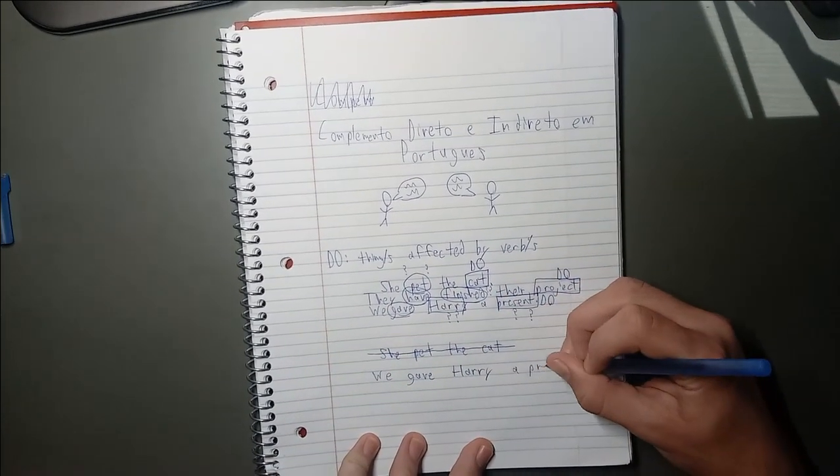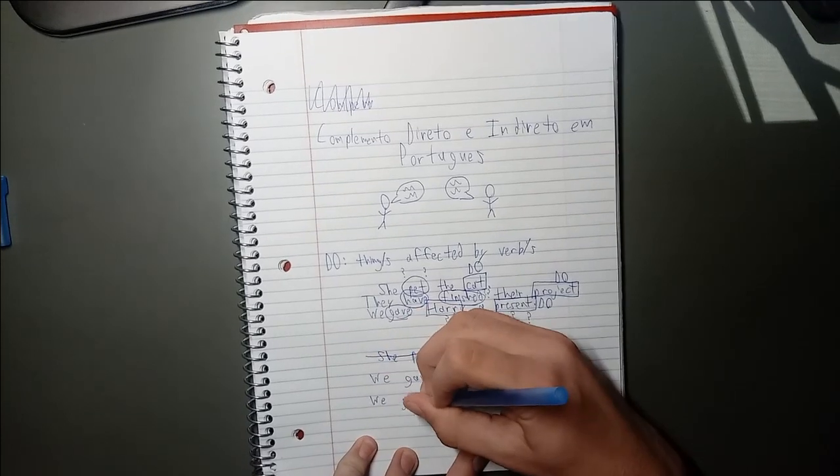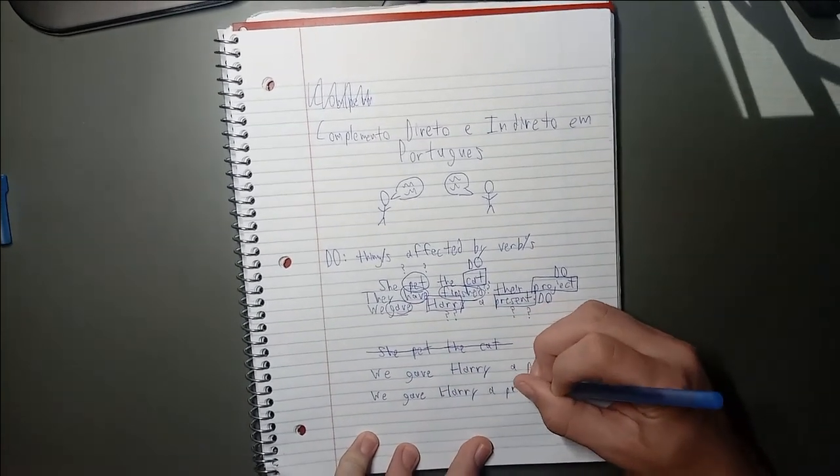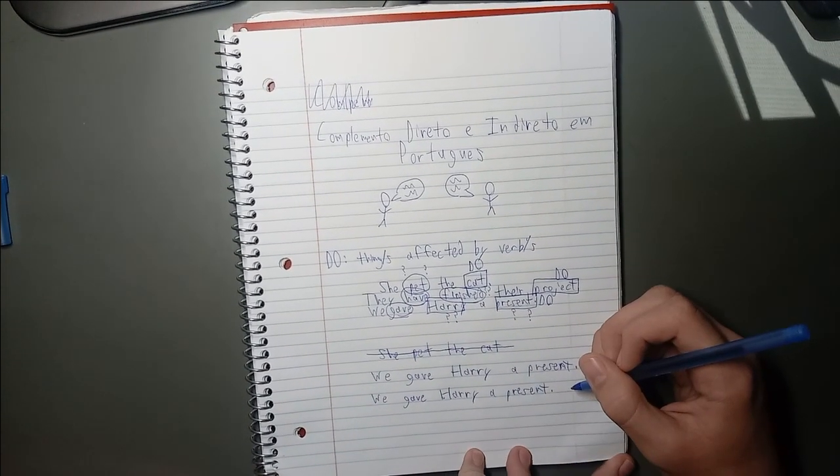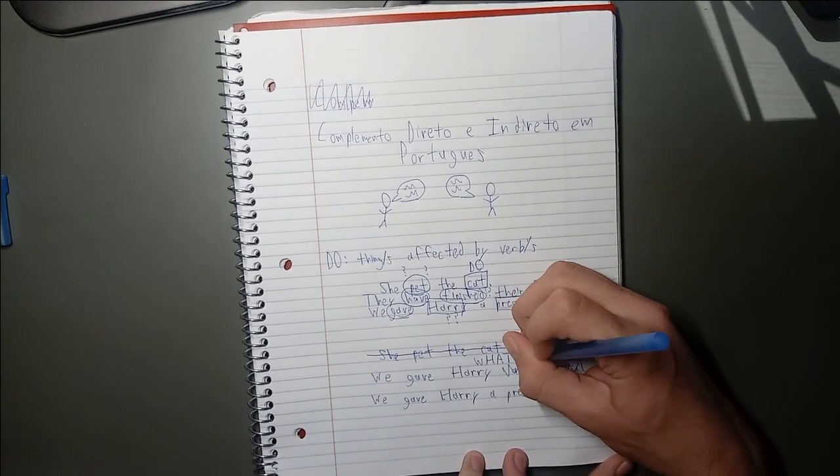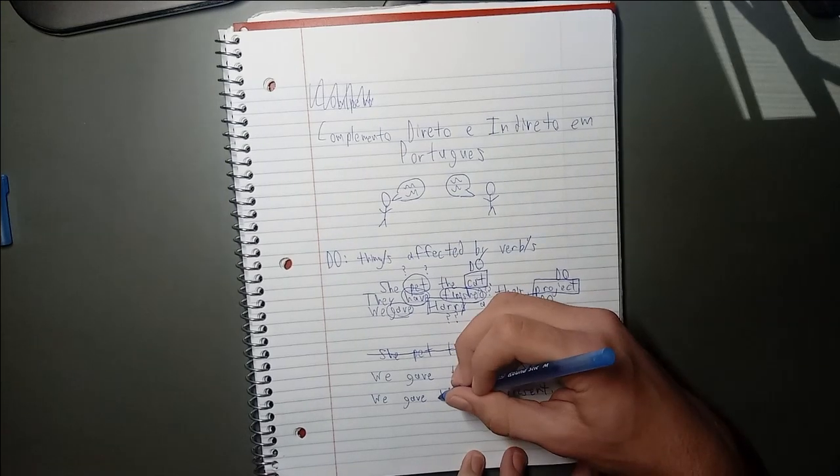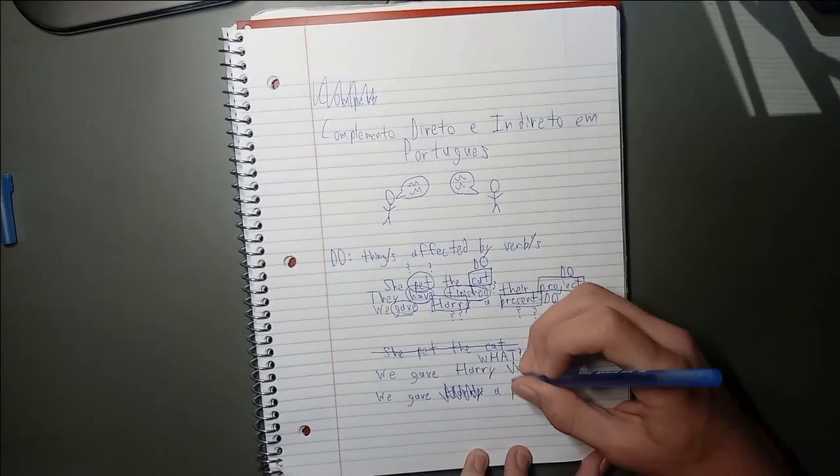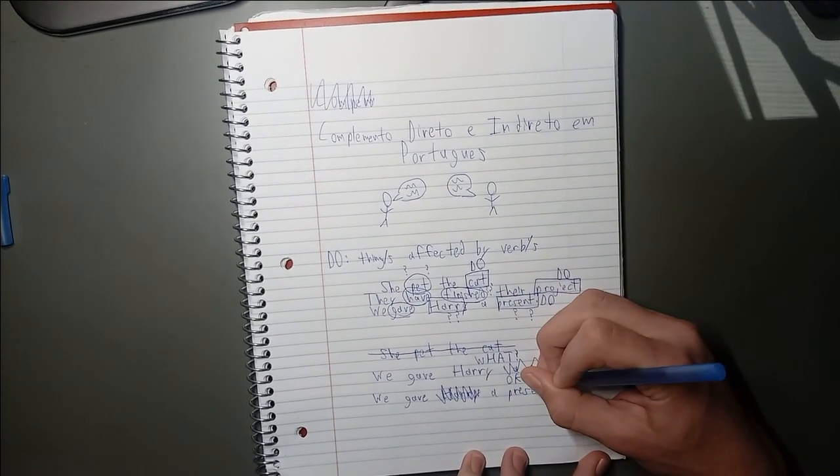Here's another way to think about it. If you're confused about which thing affected by the verb is the direct object, remember that the direct object is needed for a sentence to make sense. If you take out a present from the sentence, it becomes, we gave Harry, and it's no longer a clear sentence. However, if you take out Harry from the sentence, it becomes, we gave a present, which is much clearer.